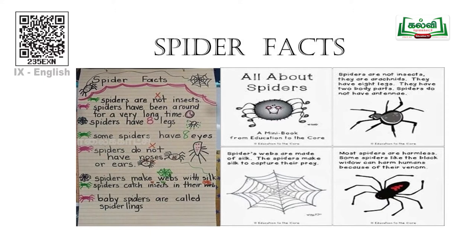Spiders do not have noses or ears. Spiders make webs with silk. Spiders catch insects in their web. Baby spiders are called spiderlings. Spiders are not insects — they are arachnids. They have eight legs and two body parts.